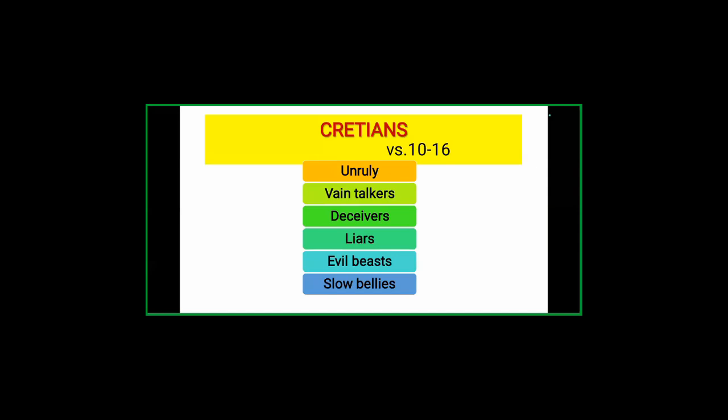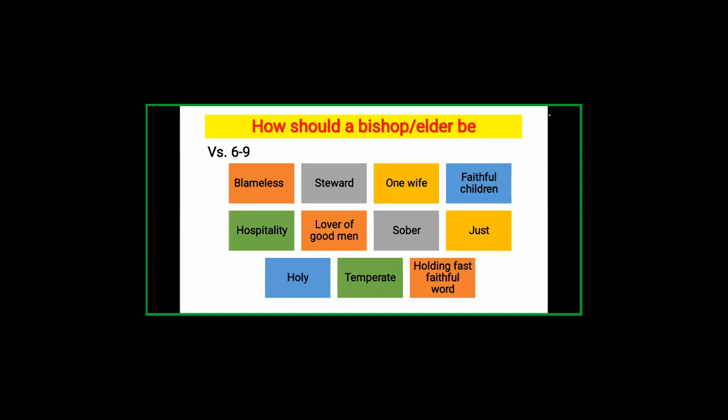Paul tells Titus how to select elders or bishops — what we might call pastors in modern times. Those called to take up responsibility in the church must have certain attributes. These attributes are based on the testimony of the prophet and Paul's analysis of the Cretians. Verses six to nine give us the qualities a person must have to be elected as an elder.